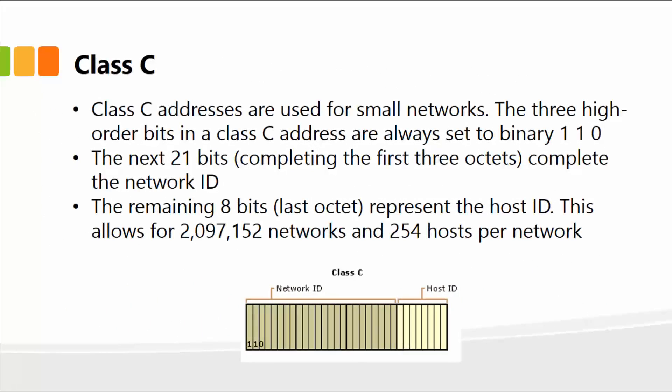Class C is used for small networks. The three high order bits in a class C address are always set to binary one, one, zero. The next 21 bits complete the network ID, and the remaining eight bits represent the actual host ID. This allows for about 2 million networks and 254 hosts per network. Remember class A, class B, and class C IP addresses.